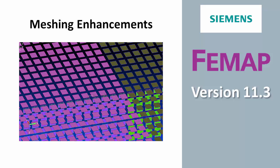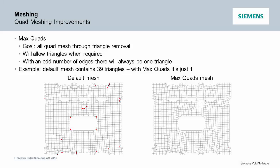Welcome to the FEMAP version 11.3 What's New video series — Meshing. A little bit of history: when we first wrote the quad mesher in FEMAP, engineers wanted almost perfectly shaped quadrilaterals. If you couldn't get that, they'd take a triangle. So the original mesher was really designed to mesh very perpendicular and create almost square elements.